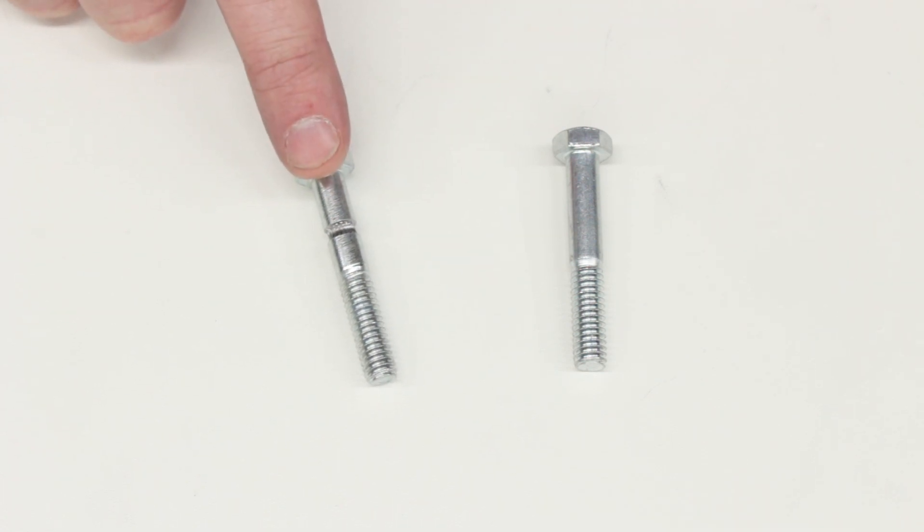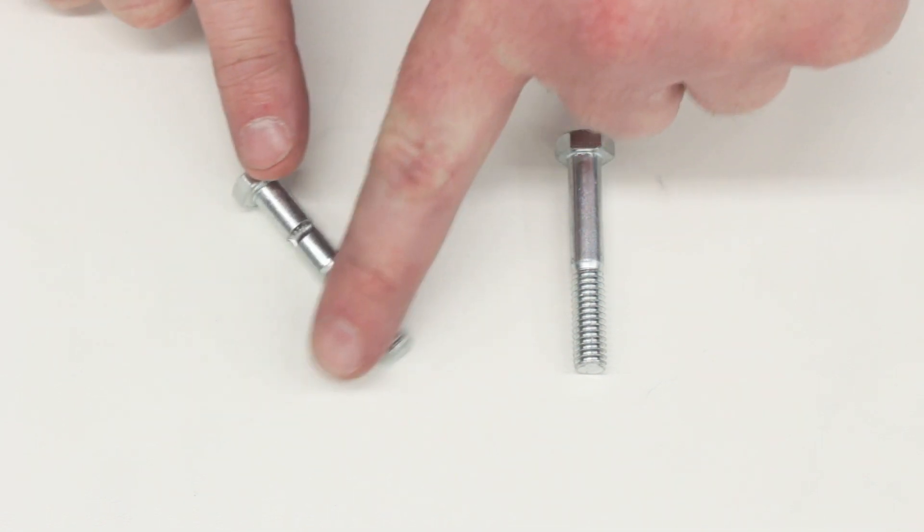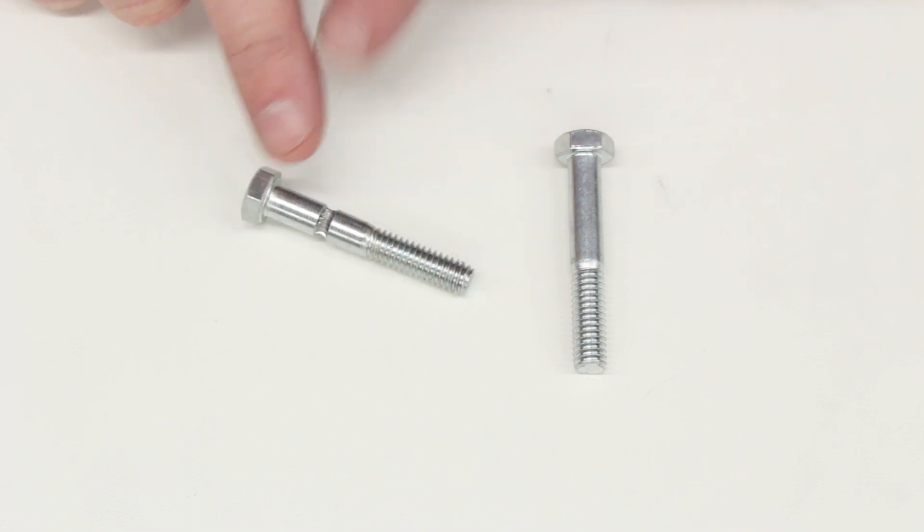This is a hobbed bolt in case you're not familiar with 3D printers. It's just an ordinary bolt that has teeth cut in the side of it. And what's that for? It's for the drive system of a fused filament 3D printer.